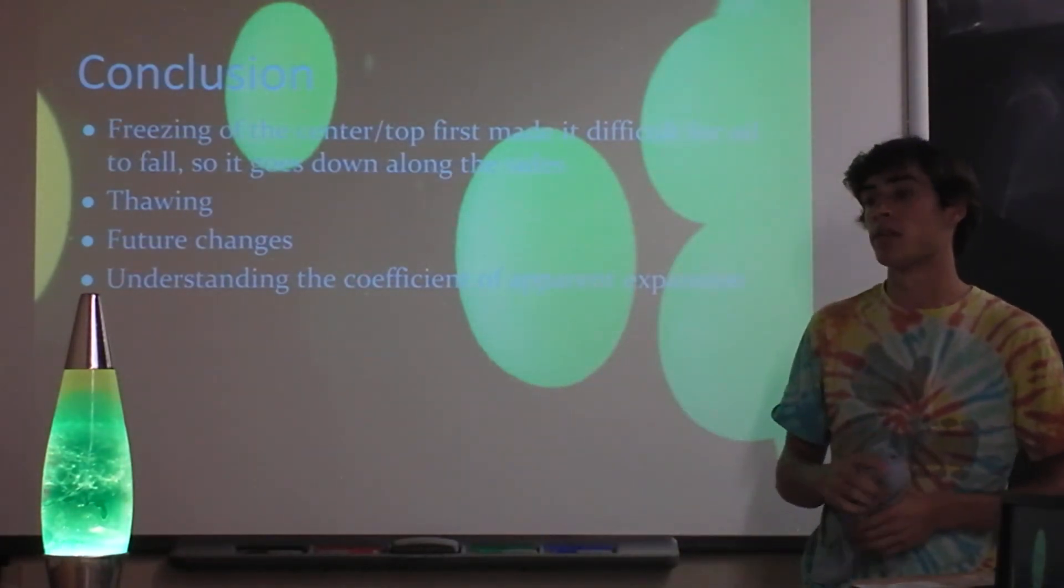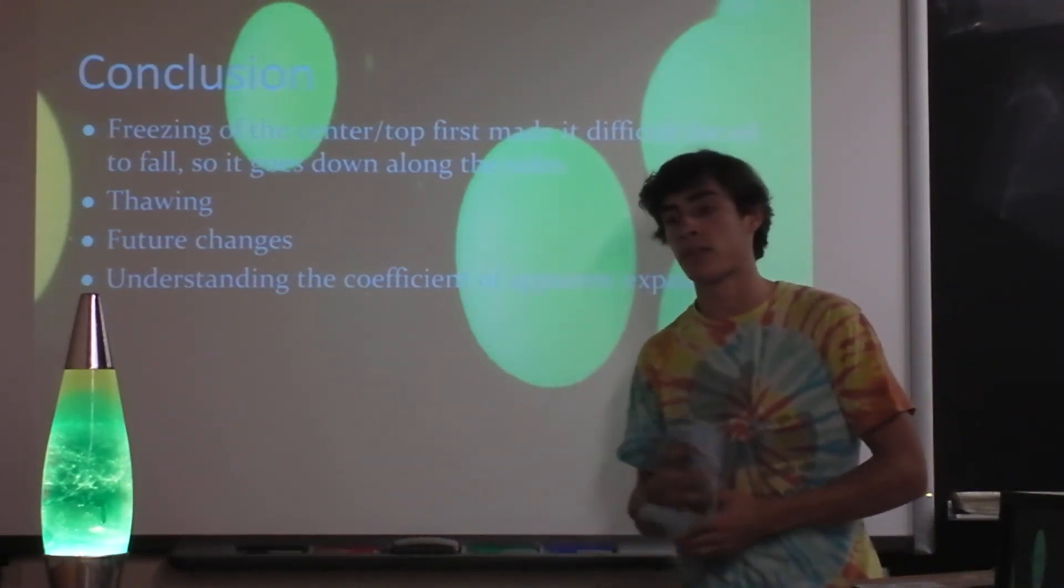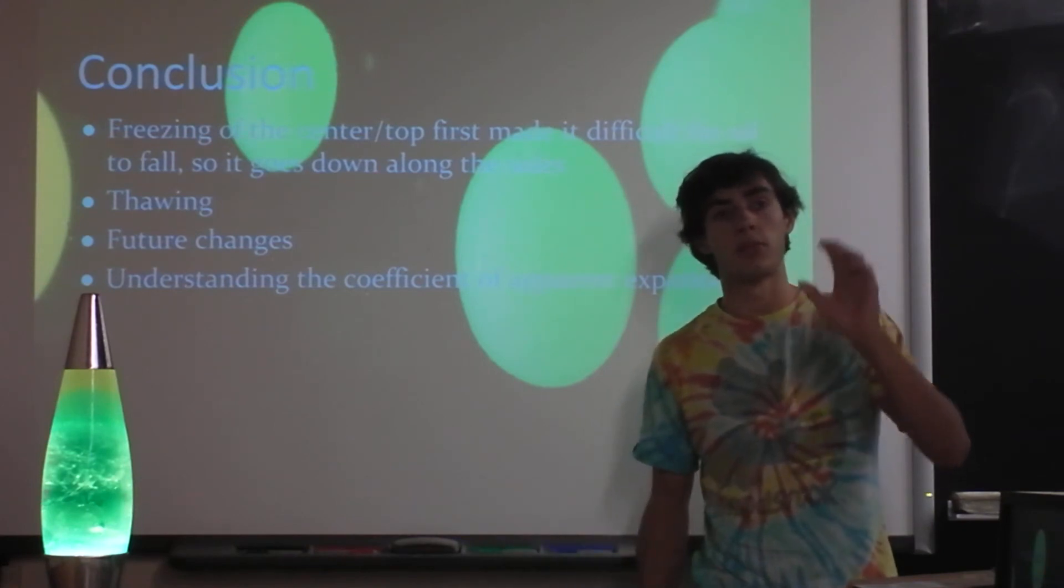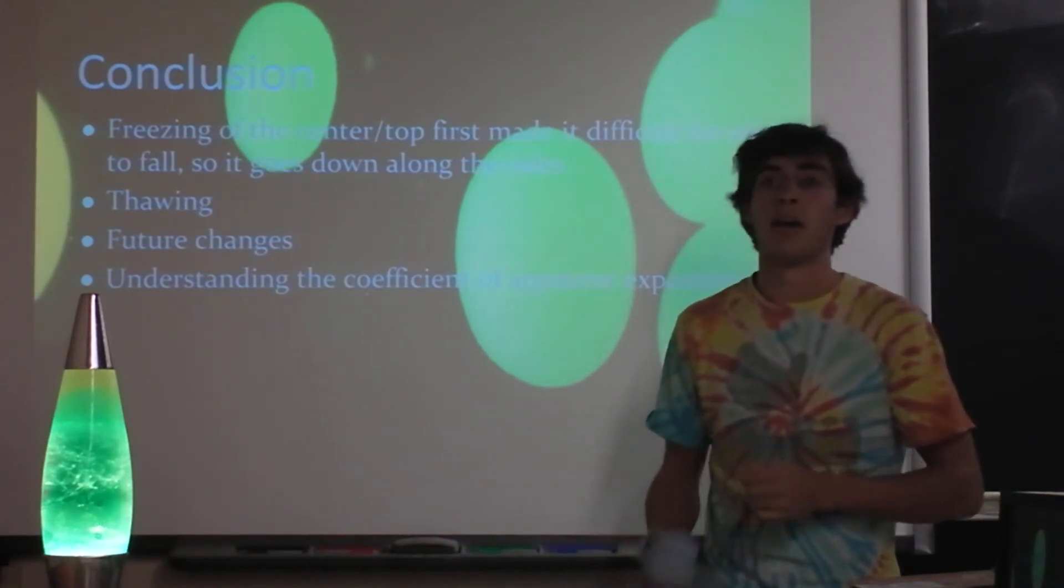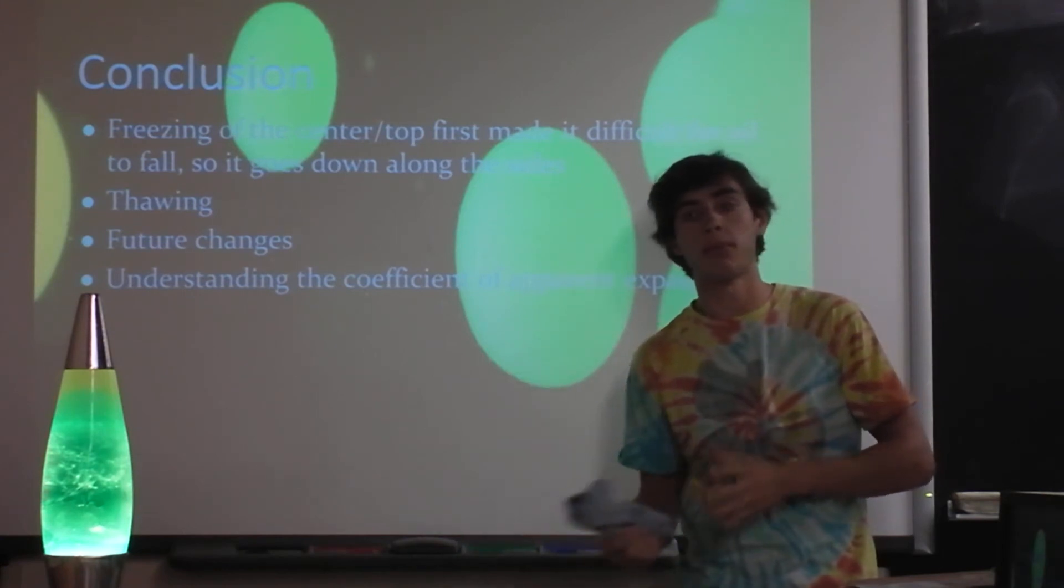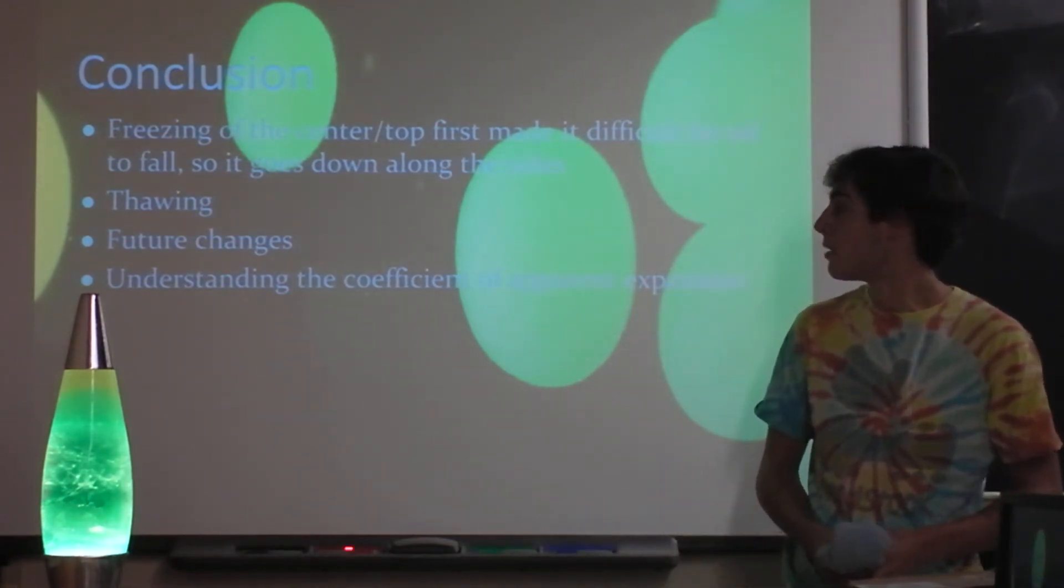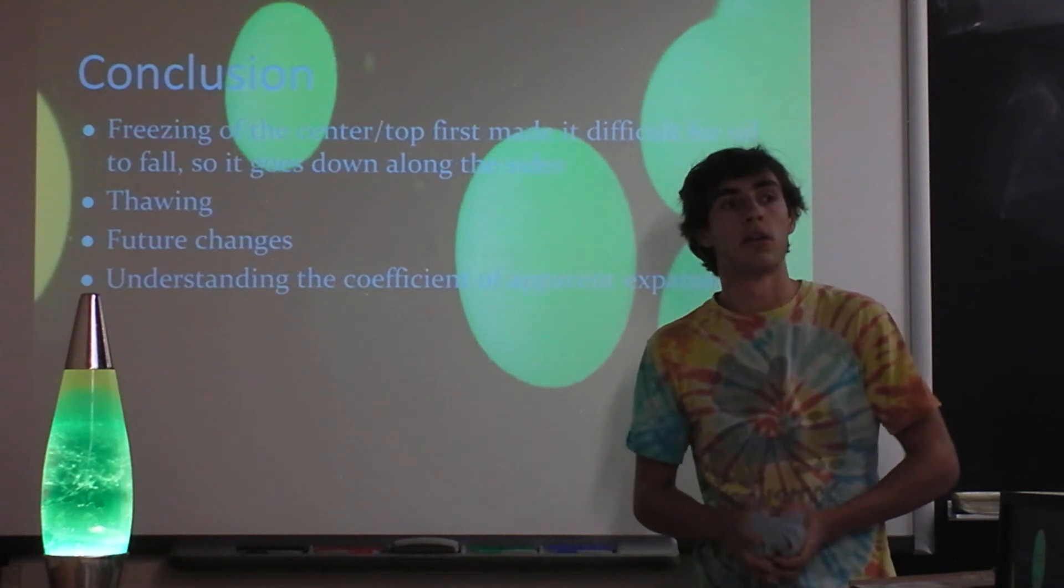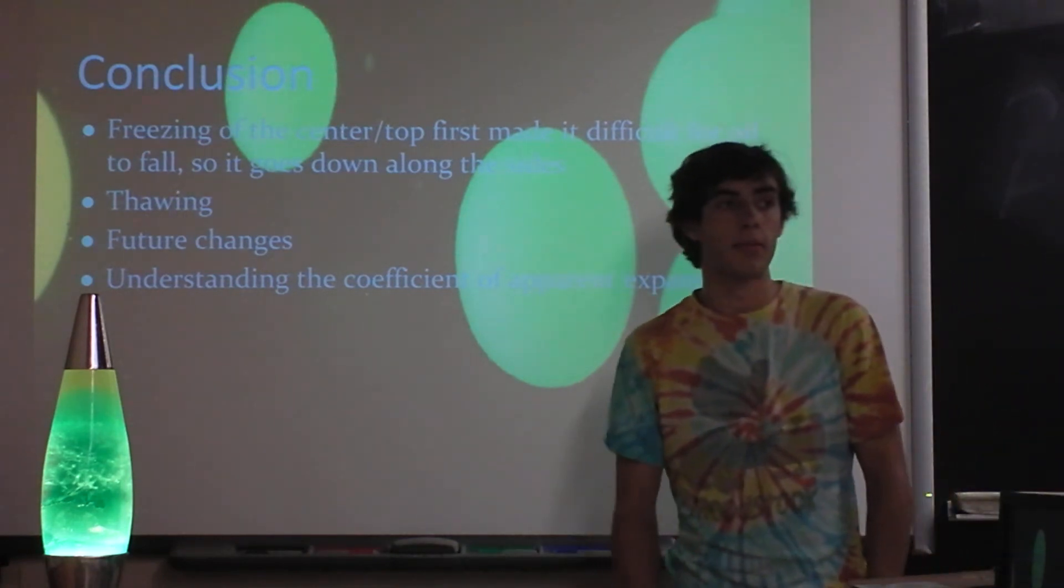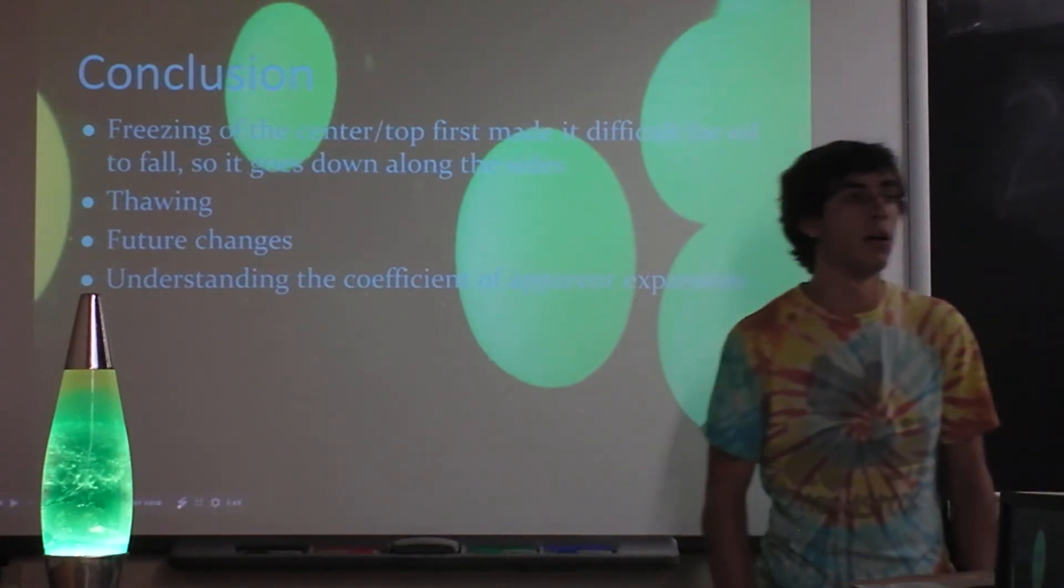In the future, so this was something I did at my house, obviously. And real lava lamps are built in factories using lots of science. And something that's a part of that is certain chemicals that are put into the wax of real lava lamps. They help the wax expand more and in a more uniform shape. And obviously, I didn't really have access to many chemicals like that. But I was glad to understand the coefficient of apparent expansion and kind of delve into thermodynamics a little more, which we didn't cover in AP1, but I think it's pretty cool. And that's about it. Thank you.